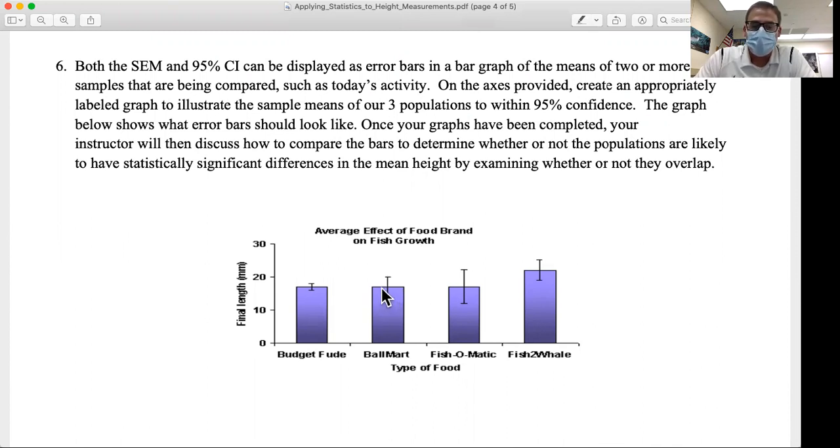When we do our experiment, we're going to get a mean final length for our sample that we're studying, but that isn't necessarily representative of the whole population.